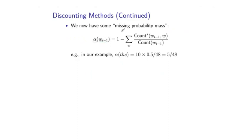And this is defined as 1 minus, here I have a sum over w, count star of wi-1w divided by count of wi-1. So, in the particular example I just showed you, you can verify that this missing probability mass is, in fact, 5 out of 48.